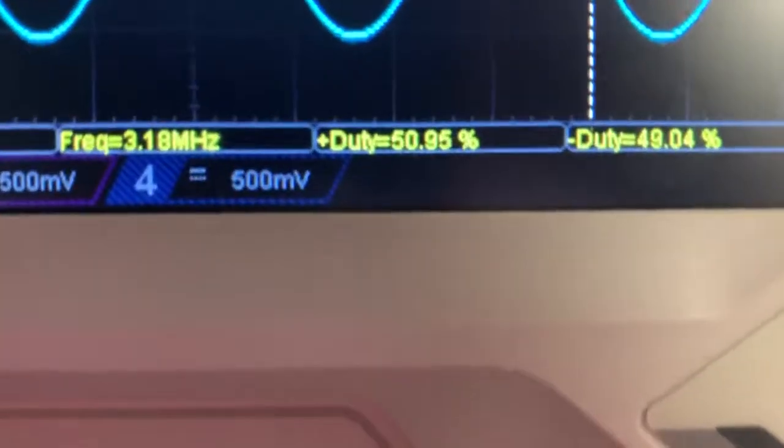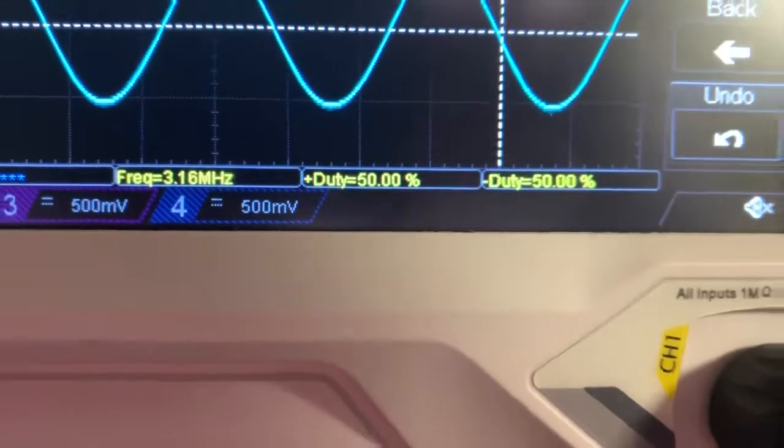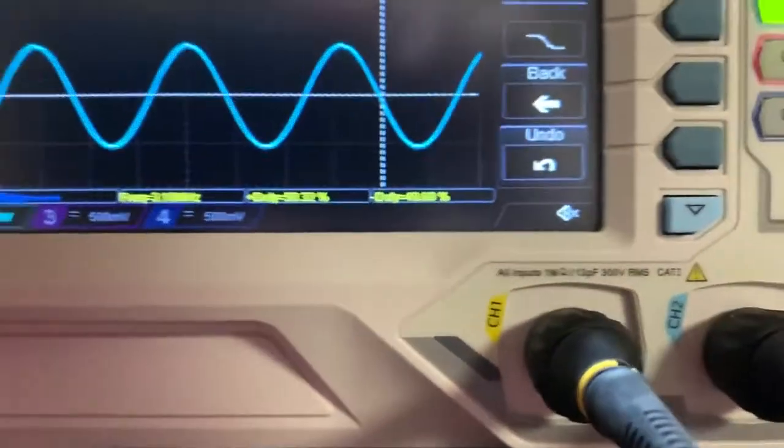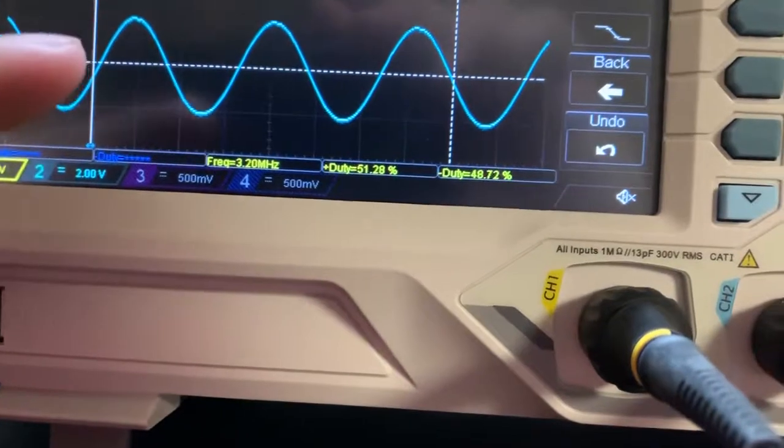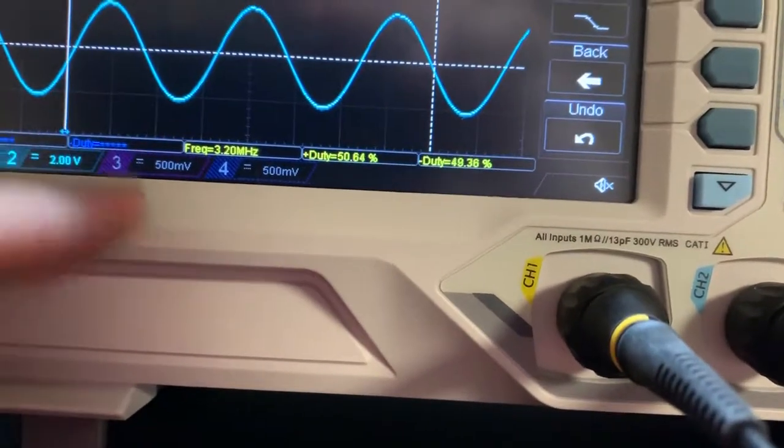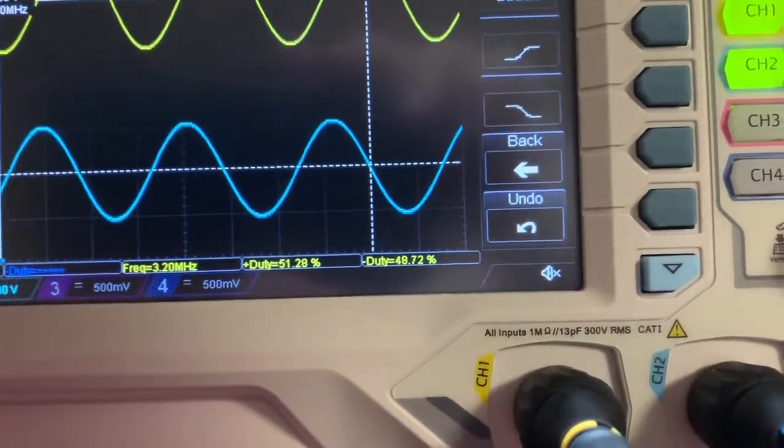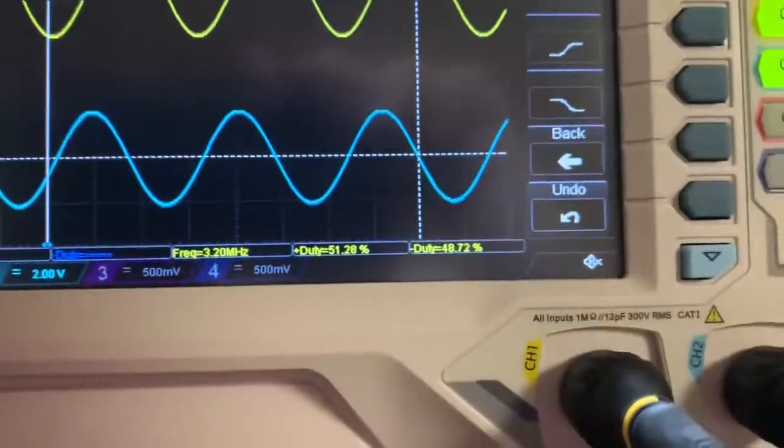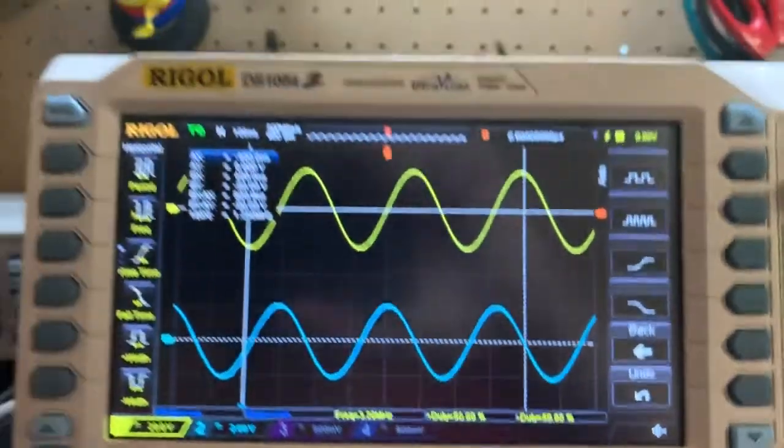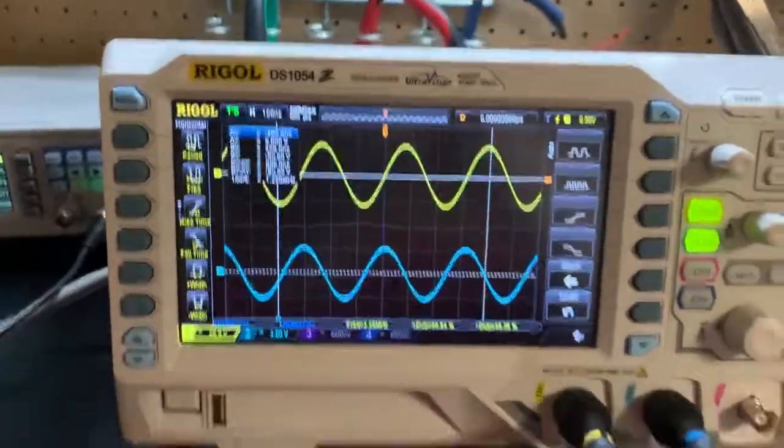You'll notice at the bottom, see the yellow frequency, 3.18 megahertz, 3.2. So the oscilloscope keeps going back and forth. It can't get the accuracy with how many, with what's going on. It can get pretty close with what it's reading out. I'm not sure if just because this is a low end entry model oscilloscope.